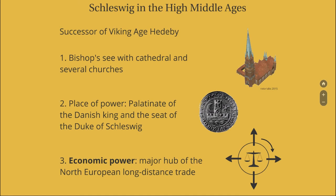Some hard facts about Schleswig in the high Middle Ages: it has been a bishop's see with a cathedral and at least seven churches. It was a place of power — there was a residence of the Danish king and the seat of the Duke of Schleswig located there. But most important is its economic power. It was one of the major hubs of North European long-distance trade, with trade relations from the North Sea in the east going up to southern France, all moving through Schleswig.